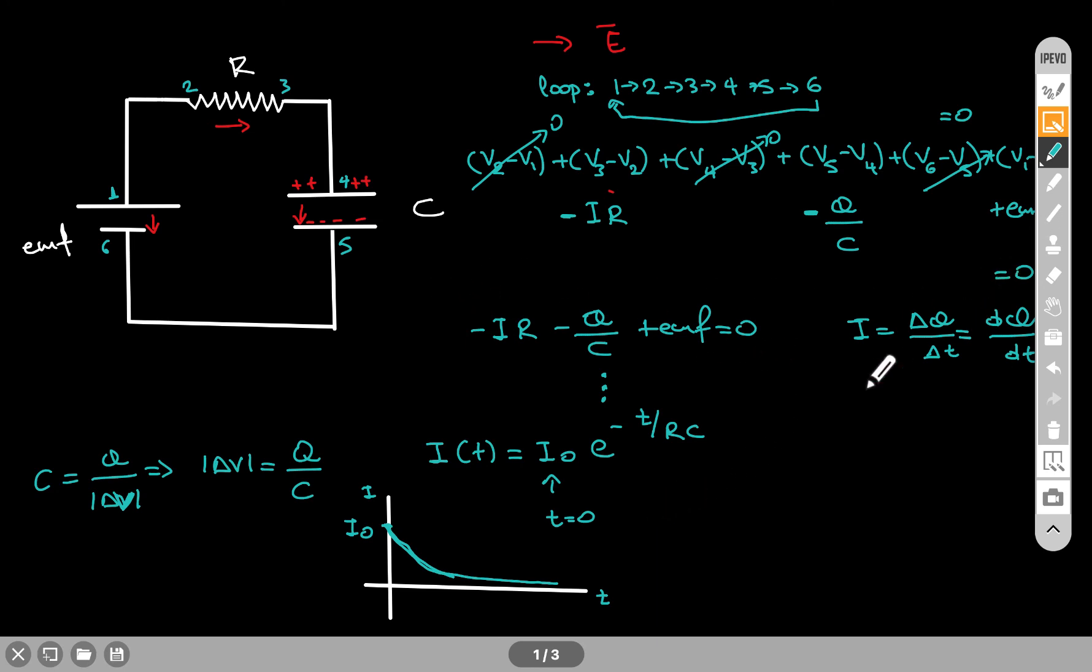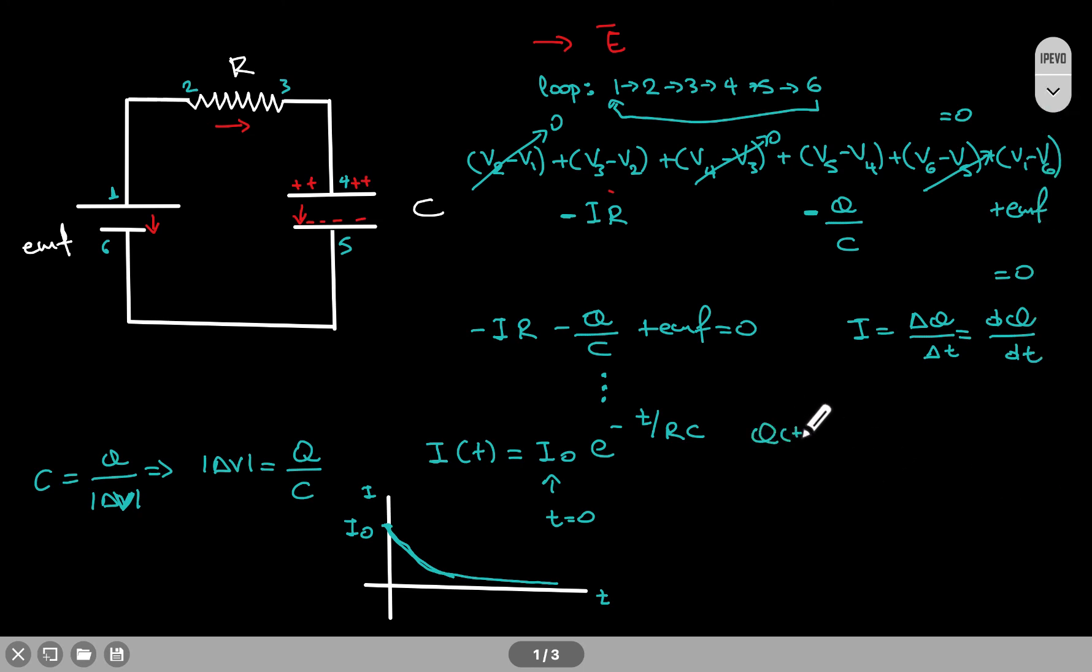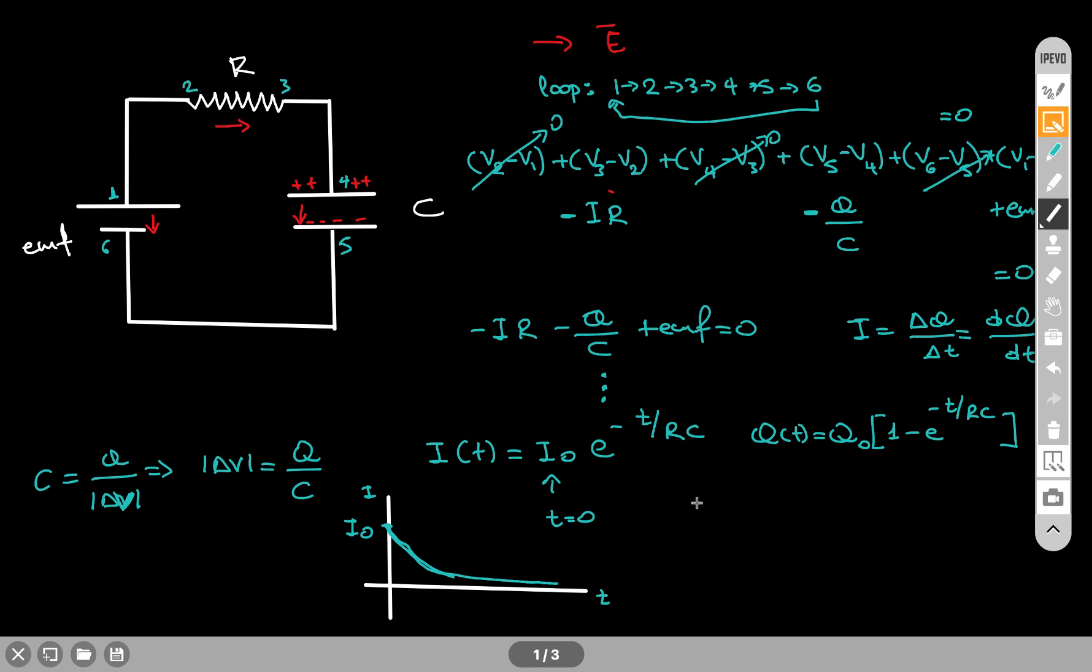Now, since I'm charging the capacitor, of course, I need to also know how much charge I have on the capacitor. And the charge on the capacitor as a function of time is q0, 1 minus e to the minus t over RC. Now, the graph for this is going to look a little bit different. Remember, this is the case where I'm charging the capacitor.